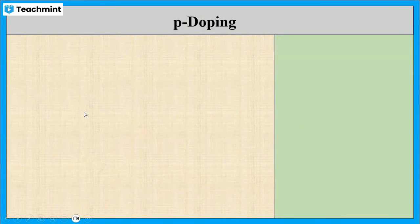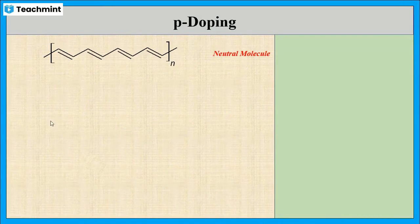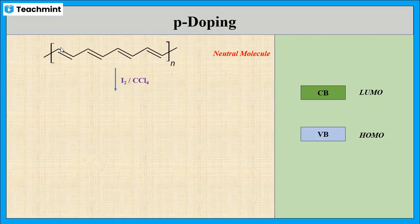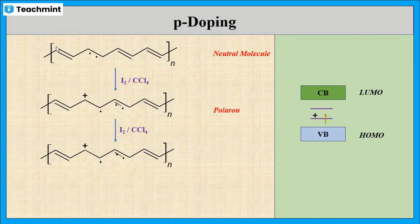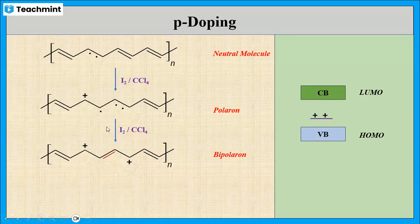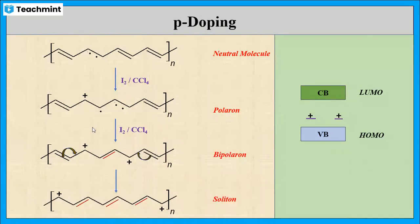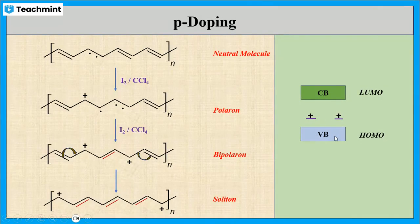To summarize the P-doping pathway: the neutral molecule acts as an insulator. By adding the dopant iodine in carbon tetrachloride, it forms a radical ion called a polaron, and further oxidation results in the formation of a dication called a bipolaron. These two positive charges are delocalized across the polymer backbone, giving rise to a soliton, which creates a band between the conduction band and the valence band and helps the electrons to flow.